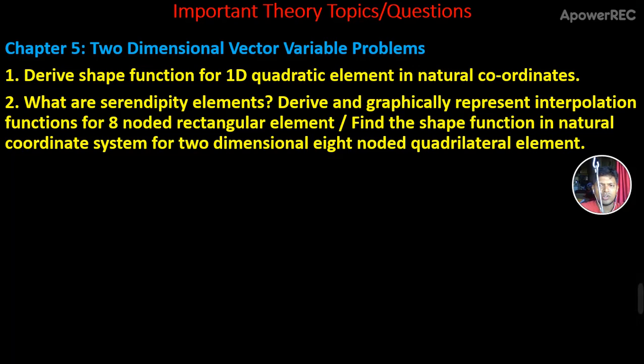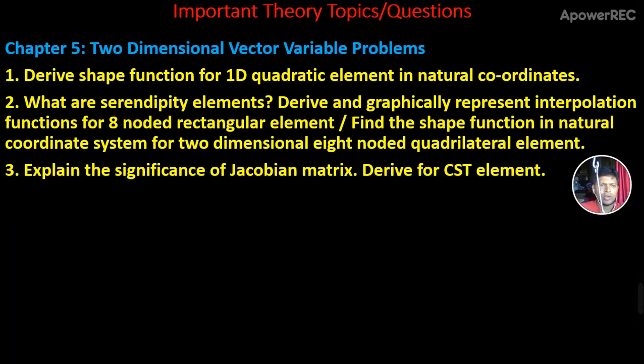Question 3: Explain the significance of Jacobian matrix derived for CST element. So these are the three questions, and now we'll be talking about numericals.